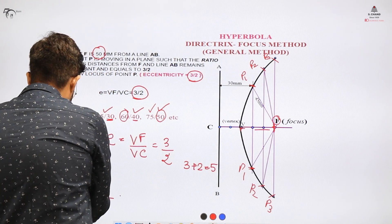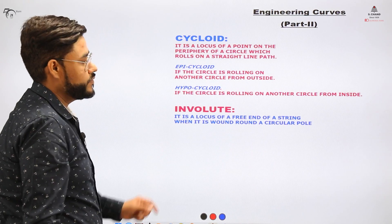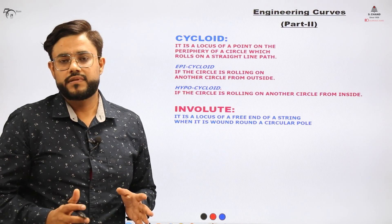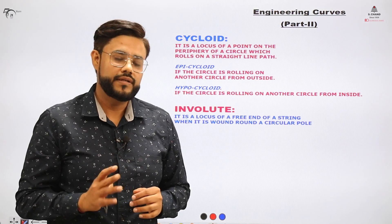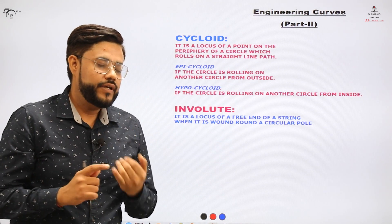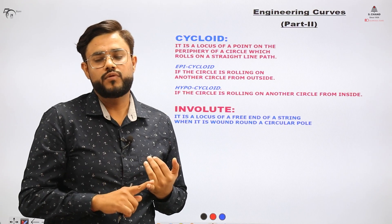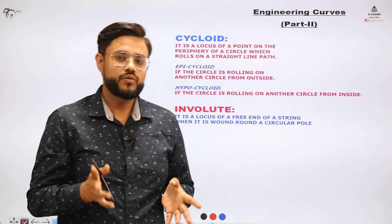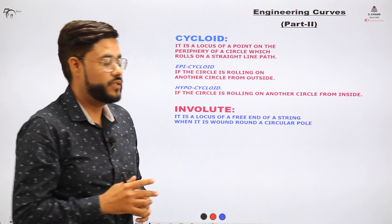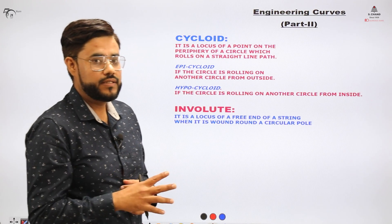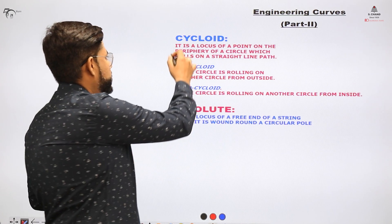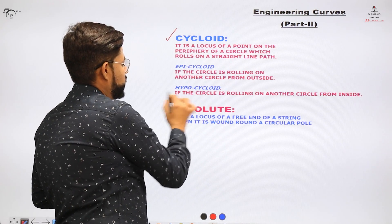This completes the concepts related to conical sections or sections of the cones. We have learned about hyperbola, parabola, and ellipse and how to construct them using the general method. Coming to the next part of this module, which covers cycloid and involute.